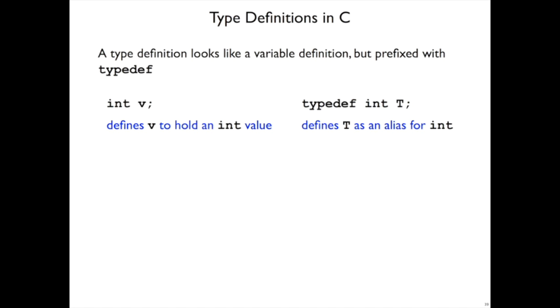So, in general, the notation for typedef is, imagine writing a variable declaration, stick typedef on the front of it, and then instead of using a variable name, you put a type name there. So just like int v declares a v integer, typedef int t declares t to be an alias for the type int.